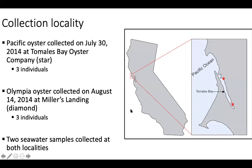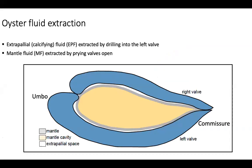For collection localities, I went to the Tamales Bay Oyster Farm to collect Pacific oyster individuals. I also tried to collect Olympia oysters at the same time, but I couldn't find any, so I had to go back a few weeks later to Miller's Boat Landing — with the help of Joe Newman and his permit — to collect some Olympia oysters. I also collected seawater samples at both localities adjacent to the oysters.